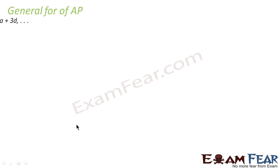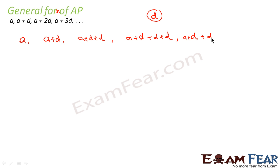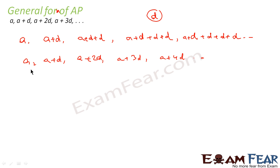The general form of AP is: A, A plus D, A plus 2D, A plus 3D, A plus 4D, and so on. This is because D is the common difference. You take the first number A, add the common difference to get A plus D, add D again to get A plus 2D, then A plus 3D, and A plus 4D in this fashion. This is the general form of AP.